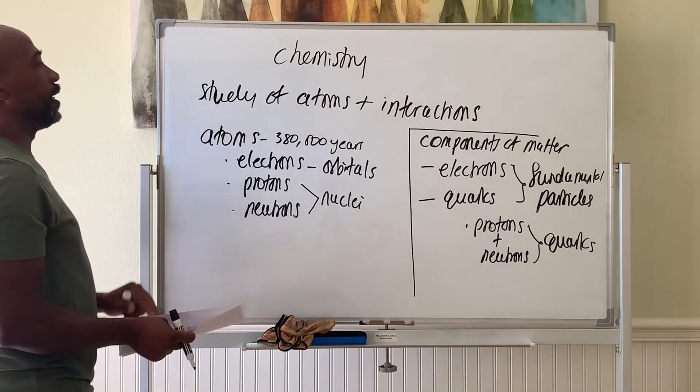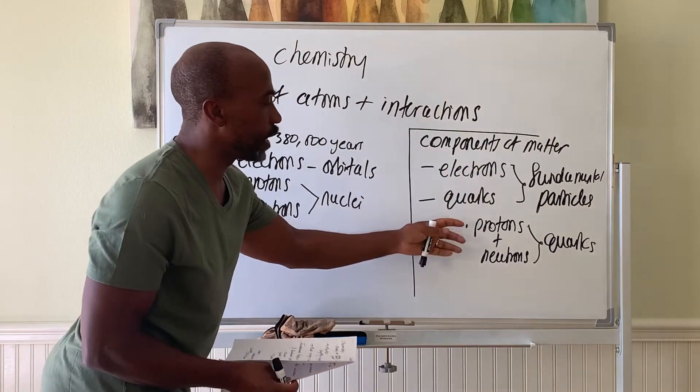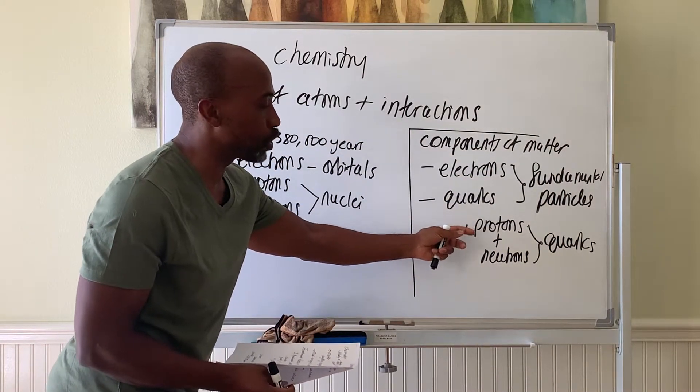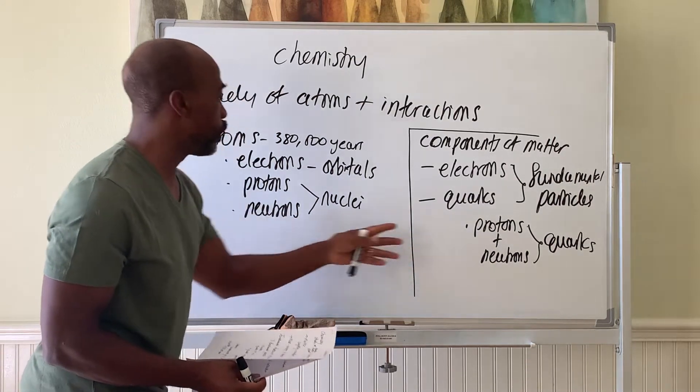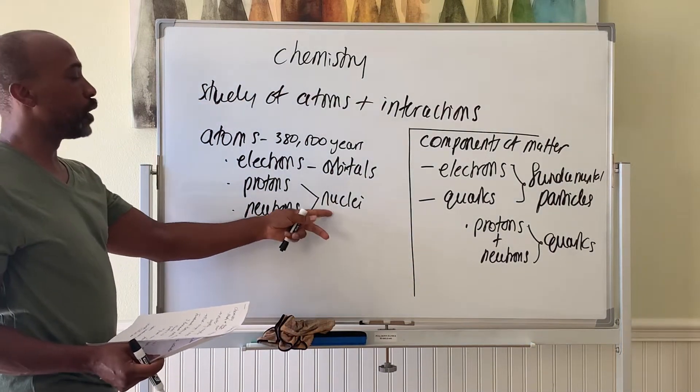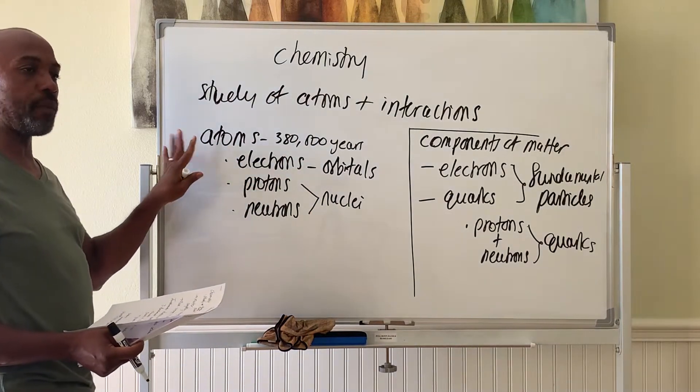We've covered the atom, the matter, the things that make up matter - electrons and quarks. Then quarks combine to form protons and neutrons, and protons and neutrons form nuclei. Then nuclei and electrons form atoms, and now we have chemistry.